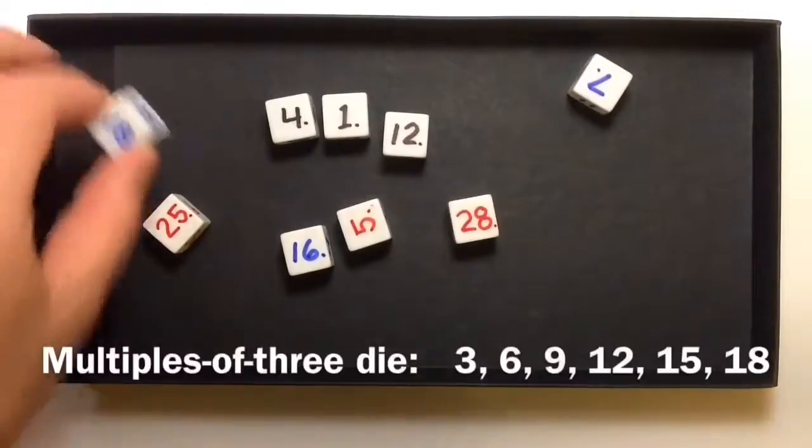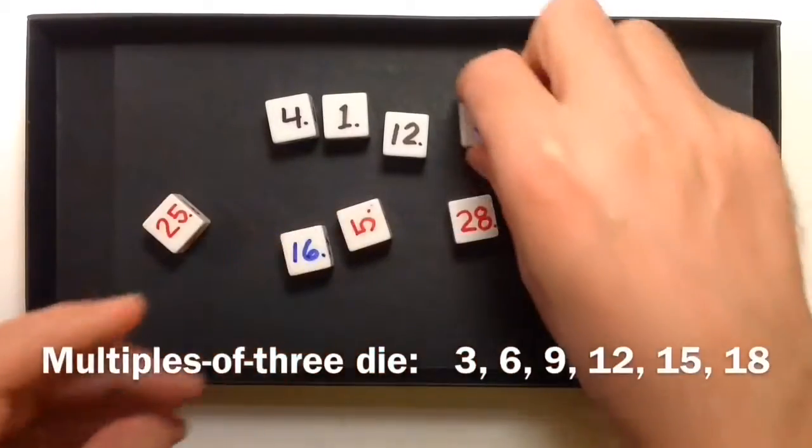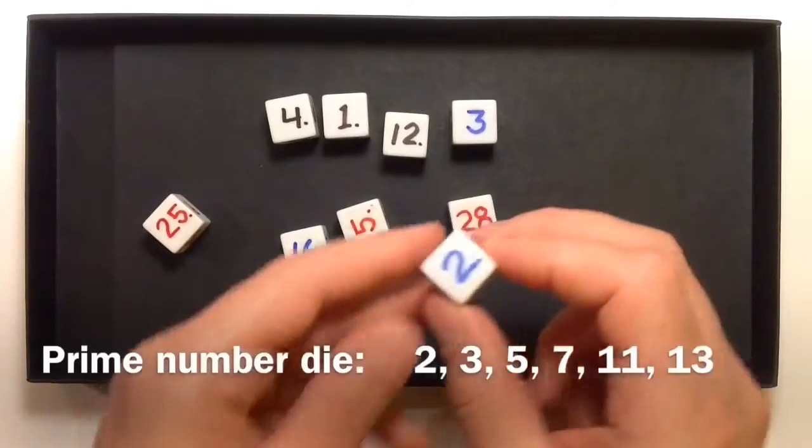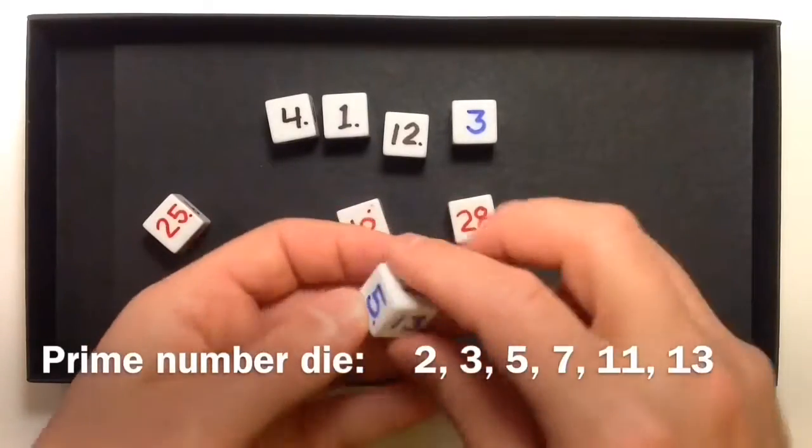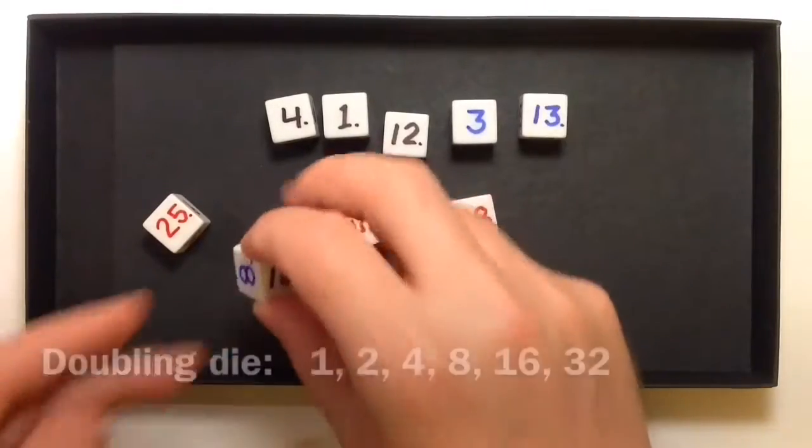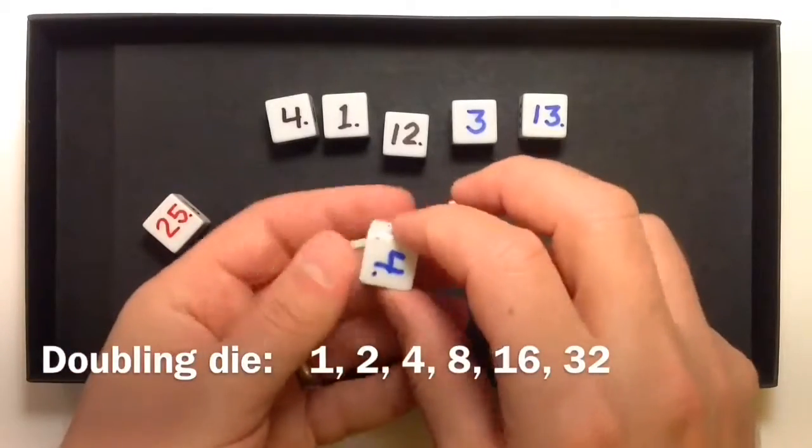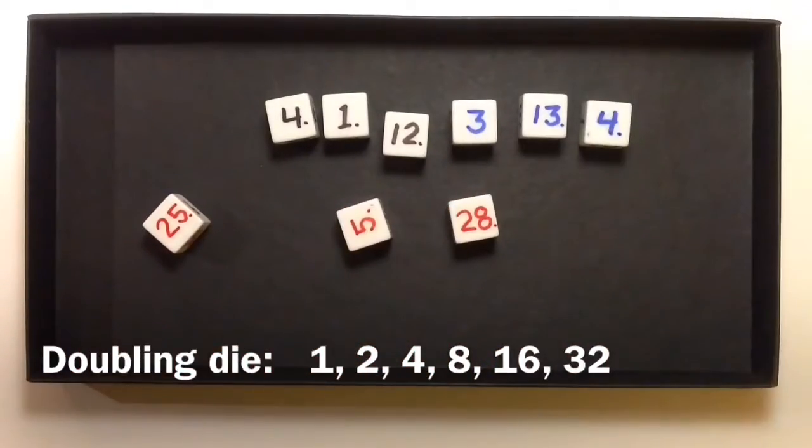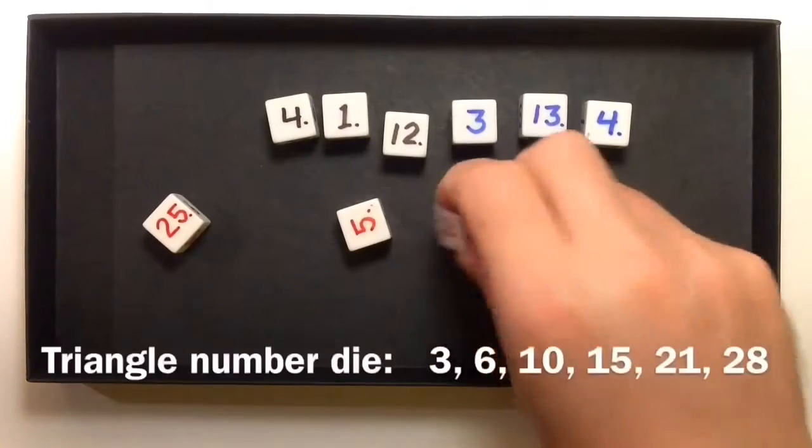There's a die with multiples of three, a die with prime numbers, a die with the powers of two, which we could also call the doubling die, there's a triangle die.